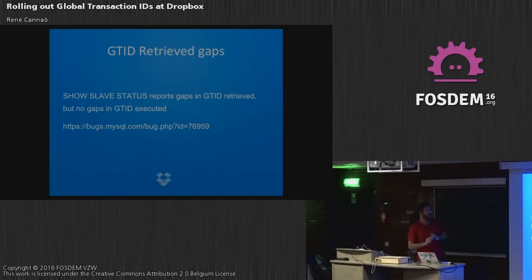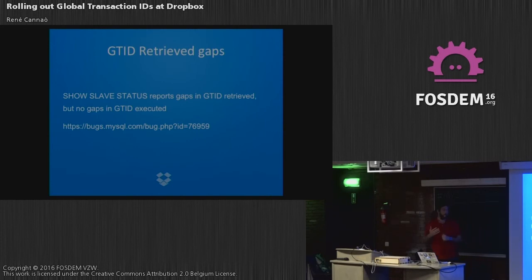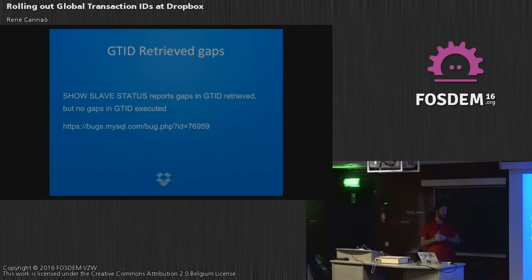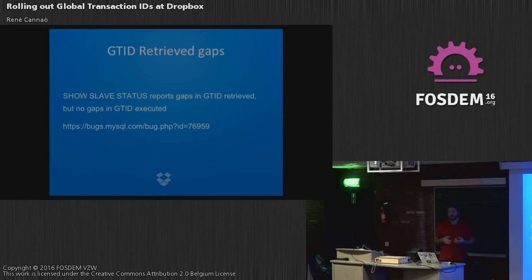We also had an issue where, when inspecting GTID sets during replication, slaves reported that they had executed certain GTIDs that they claimed never to have received from the master — which made no sense. Analyzing the slave's binary logs confirmed the events were there and had been executed. We also had consistency-checking tools confirming no data drift. Eventually we traced this to a bookkeeping bug in Percona: the slave was simply losing track of which GTIDs it had received from the master.